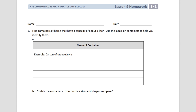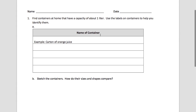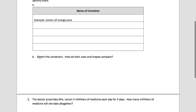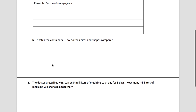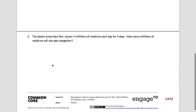Once you find those containers, you're going to write them down in the boxes below. An example is a carton of orange juice. Try to find four containers at your house that are about one liter. After you do that, sketch or draw the containers, and you're going to write about how their sizes and shapes compare — the differences in their sizes and shapes — and how they all show about one liter.